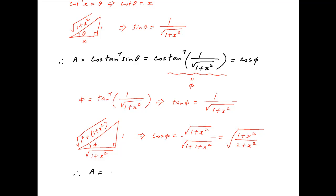Therefore the given expression a, which is equal to cos phi, is equal to square root of 1 plus x squared upon 2 plus x squared, which is the required answer.